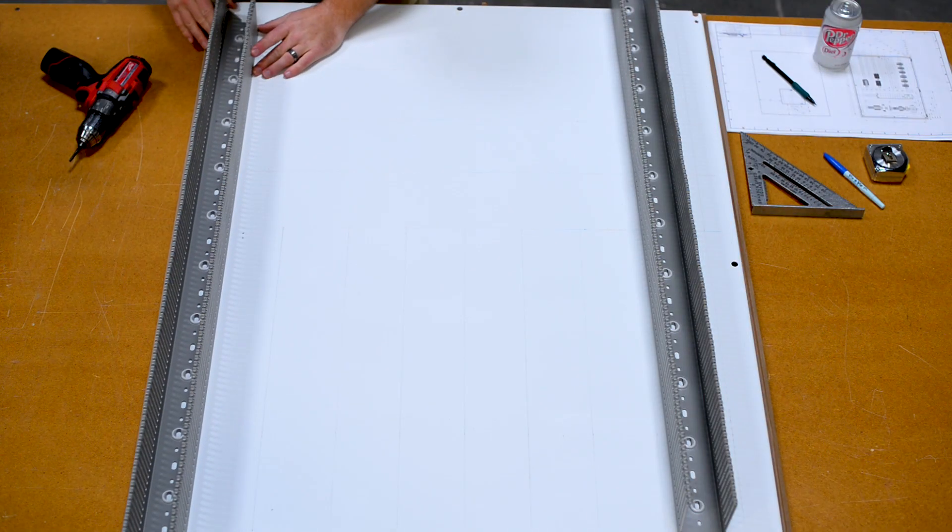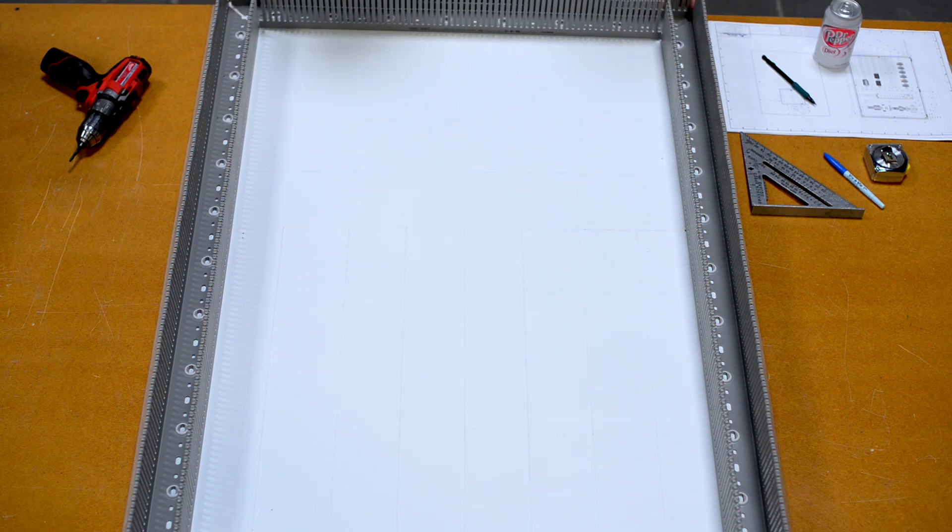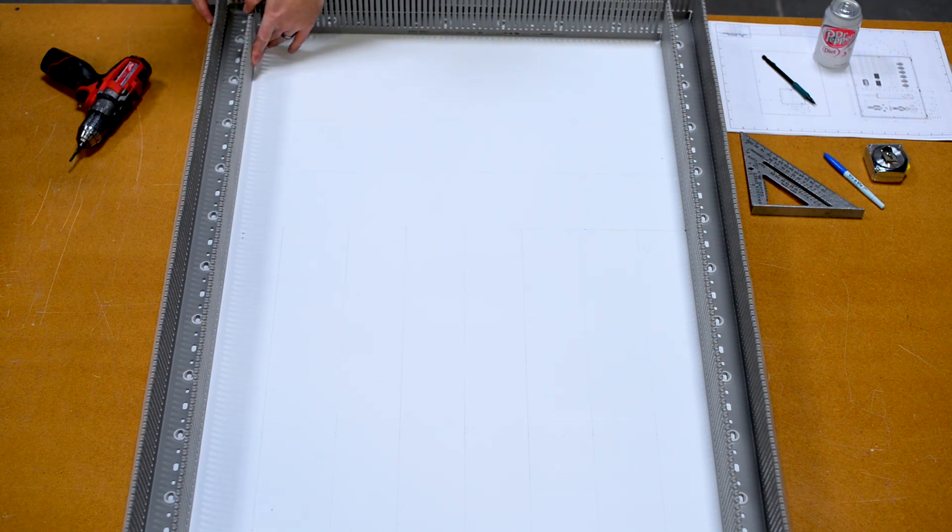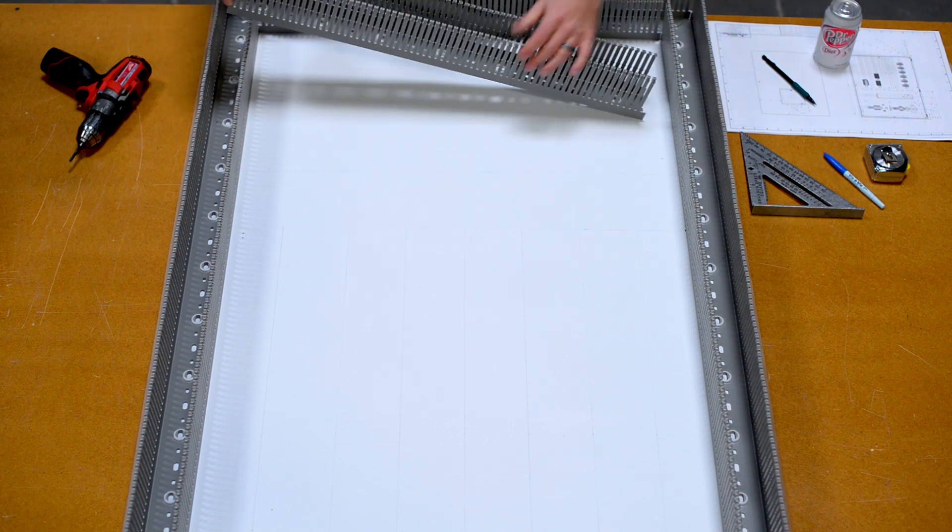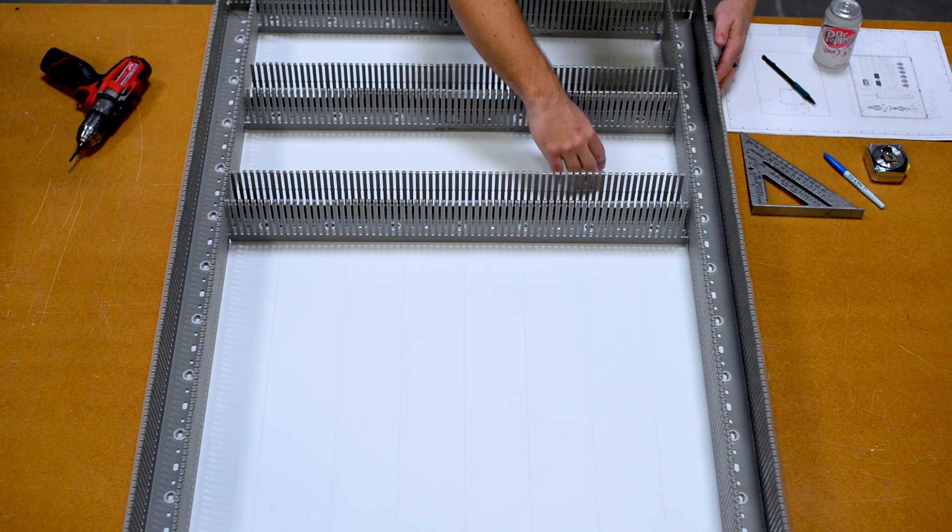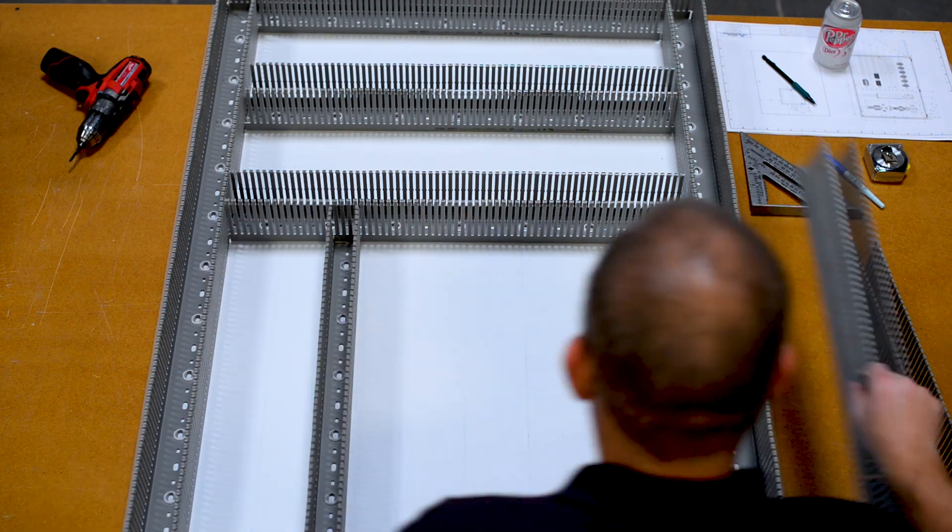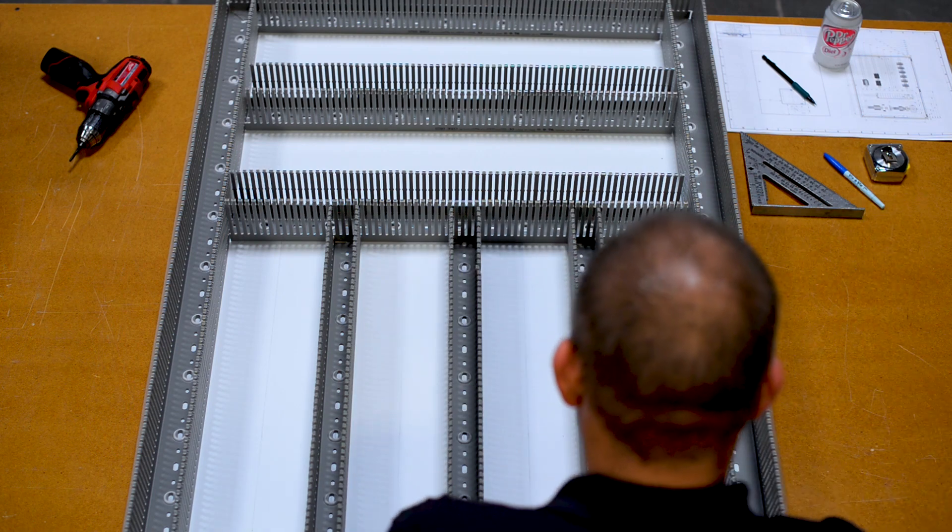Once all the material has been cut, it's time to do a dry layout on the back plane to make sure everything will fit as intended. This dry layout is a process that gets commonly ignored among many panel builders but is critical to making sure that everything fits the right way the first time.